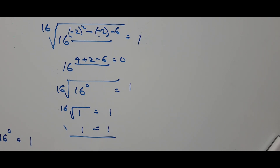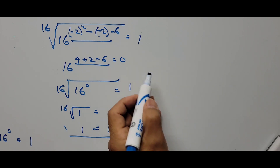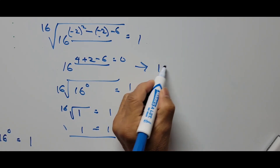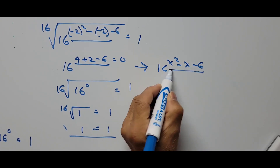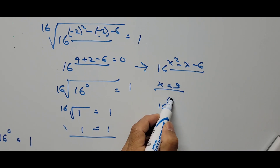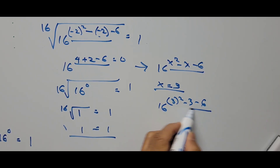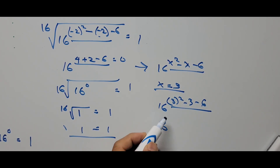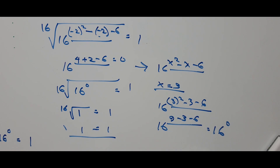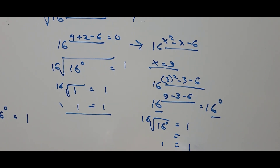Now checking x equals 3: substituting into the exponent gives 3 squared minus 3 minus 6, which is 9 minus 3 minus 6, equals 0. So we again get the 16th root of 16 raised to the 0, which equals the 16th root of 1, which equals 1. So 1 equals 1 — confirmed.